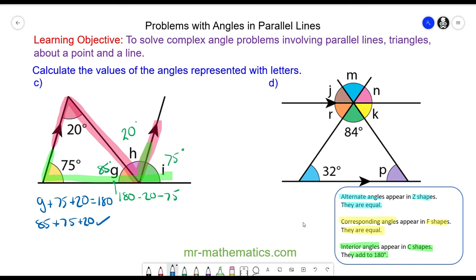And finally for question D, we can see the angle R and the 32 degree angle are alternate because they lie within a Z shape. So angle R will be 32 degrees. And this is vertically opposite angle N, so angle N will be the same as 32. We can work out angle K because it lies along a straight line with the 32 and the 84 degree angle. It's 180 minus the 32 minus the 84, so angle K is 64 degrees. And this is vertically opposite with angle J, which is also 64 degrees.